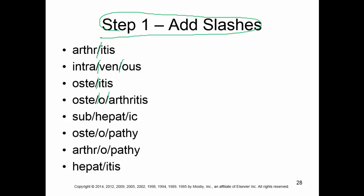For example, if you're doing this on your own, I'd like you to pause this video and attempt to define these terms: intravenous, osteitis, osteoarthritis, subhepatic, osteopathy, arthropathy, and hepatitis. Try to define those first, then press play again once you have an attempt at all of these.